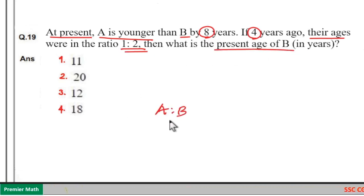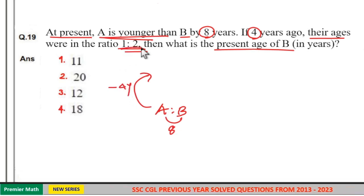Here age difference between A and B is 8 years. A is younger than B by 8 years. Now 4 years ago age ratio of A and B was 1 to 2.